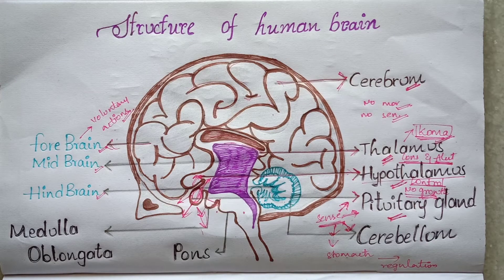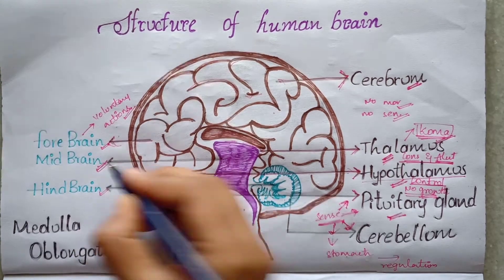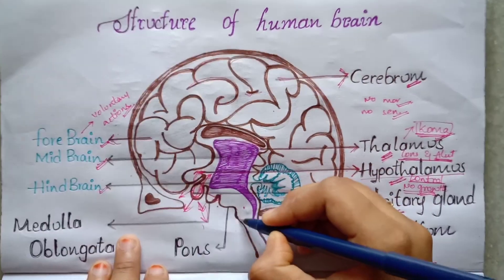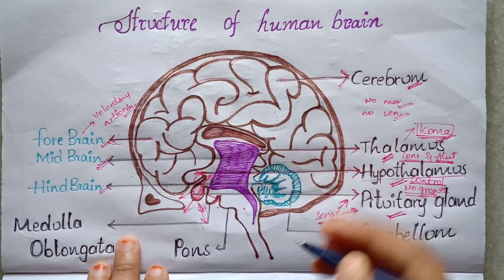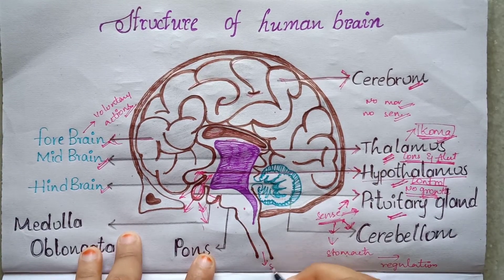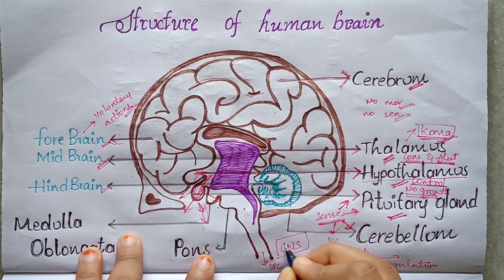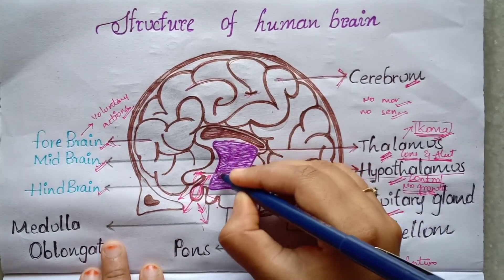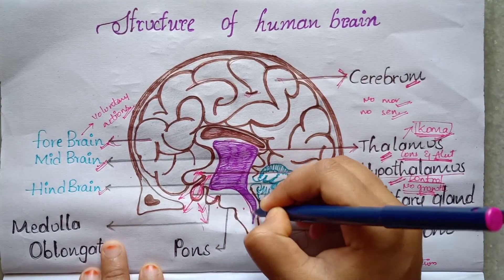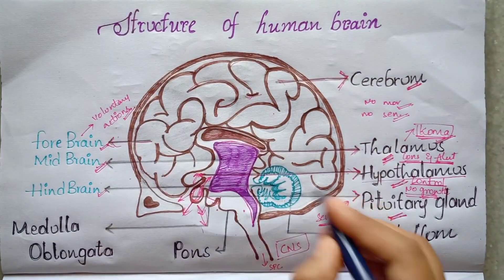The midbrain is the beginning section of the brainstem. It connects the spinal cord. The brain and spinal cord together are called the central nervous system. Therefore, the midbrain is the beginning section of the brainstem, and the hindbrain is the latter section.